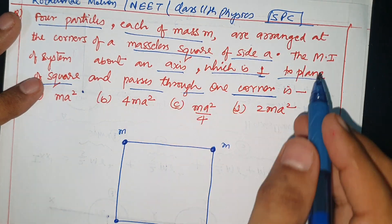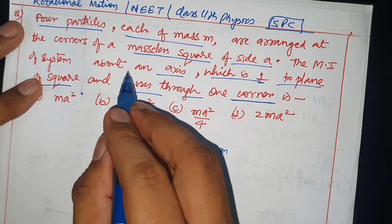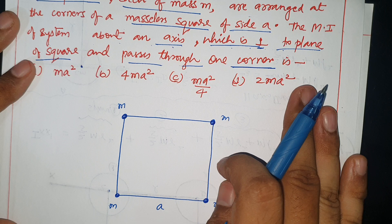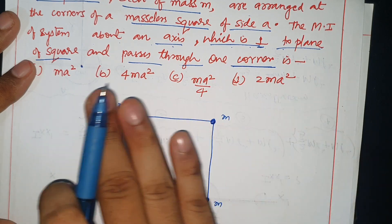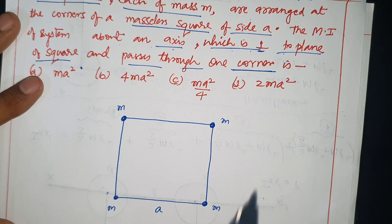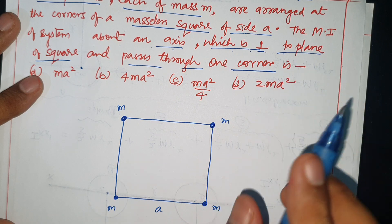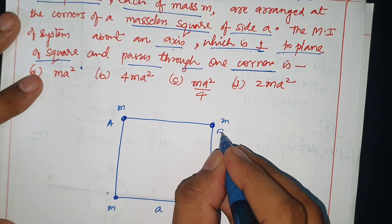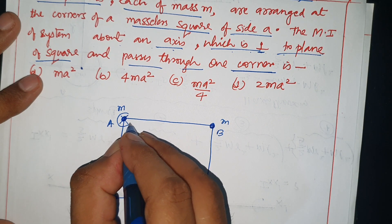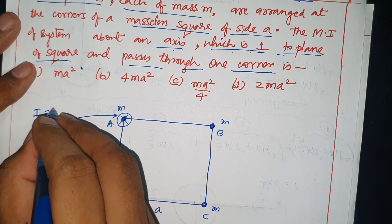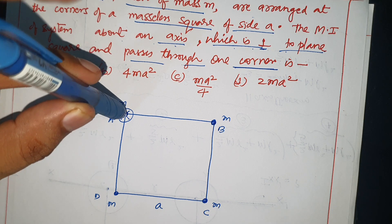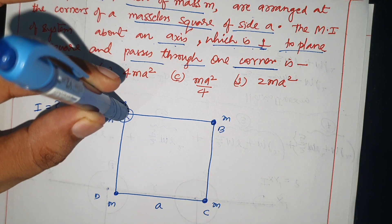Moment of inertia for the system about an axis which is perpendicular to the plane of the square. This is a square plane. The axis passes through one corner A, B, C, D - this way it will pass. This is the whole system. The square plane is perpendicular through one corner.